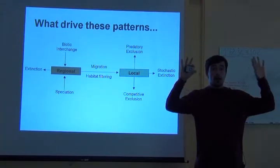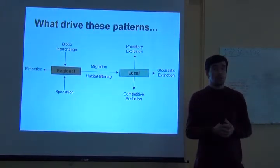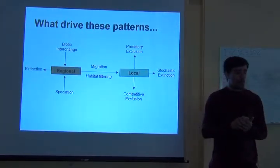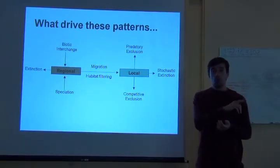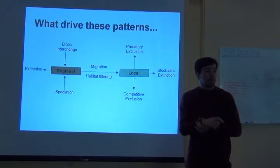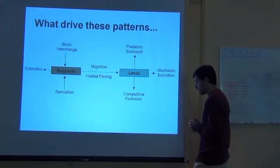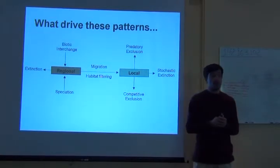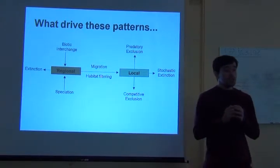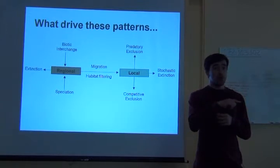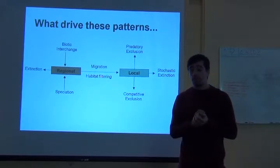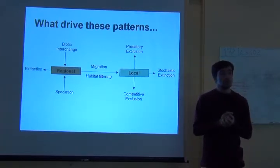Biotic interchange — the exchange of species pools between large regions — is a very rare event involving long-distance migration. For example, millions of years ago there was a split between South America and Africa, and since that time a few species could actually make the entire journey and recolonize the other continent. This biotic interchange increases species richness both regionally and locally.